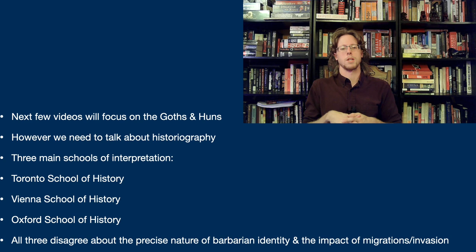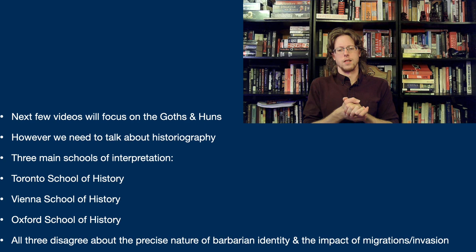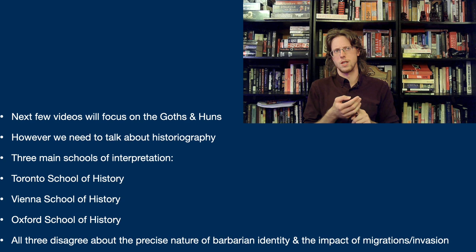The main ways of understanding the evidence available for the Goths — and really the barbarian migrations in general — are threefold. We have the Toronto School of History, the Vienna School, and the Oxford School. All three of these are based around universities and scholars in three different cities: Toronto, Vienna, and Oxford.